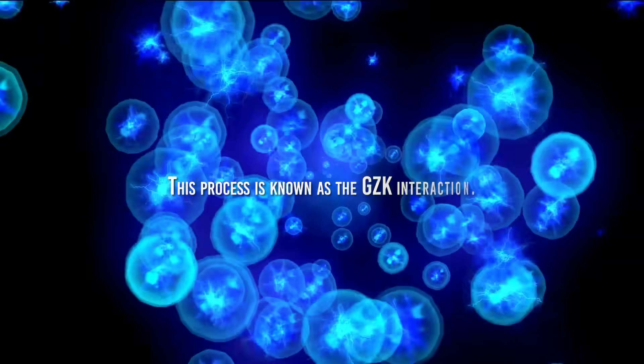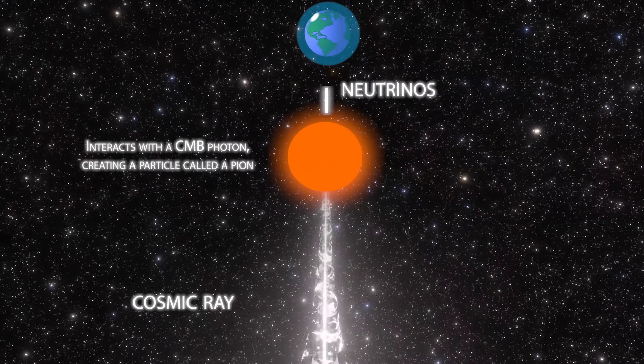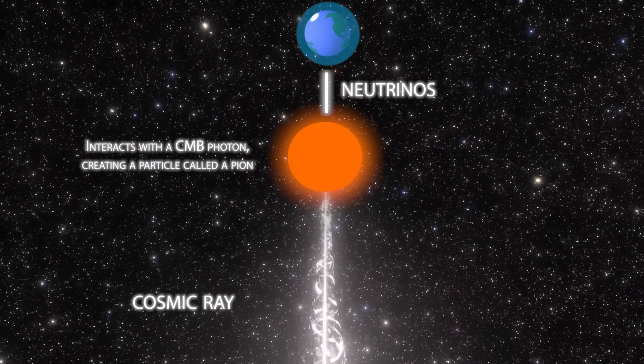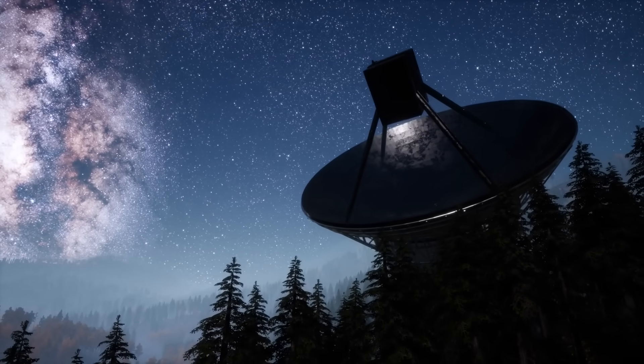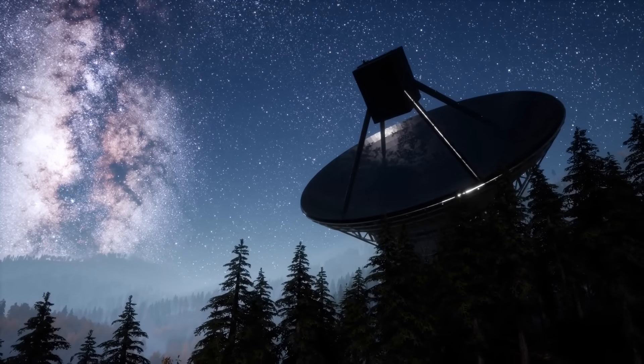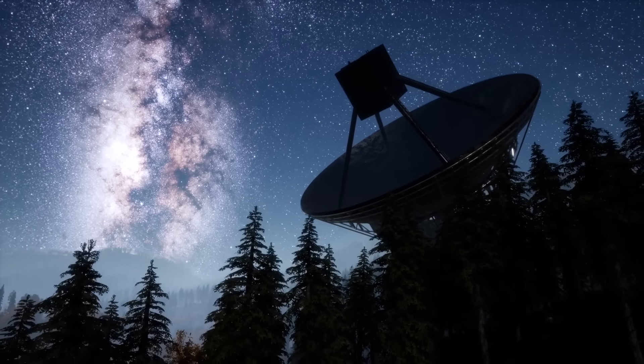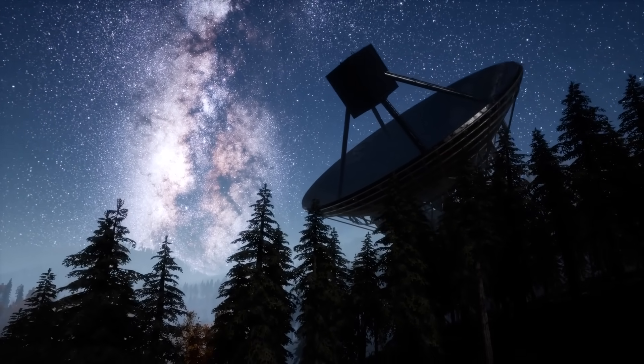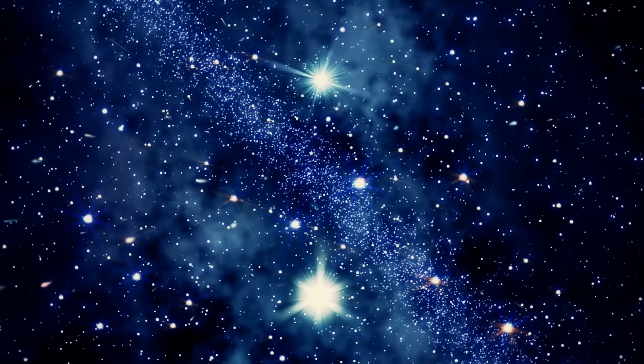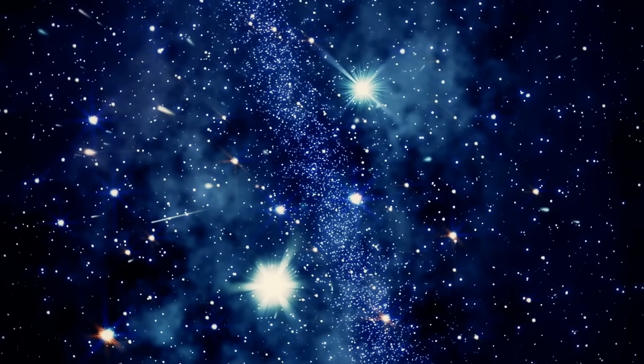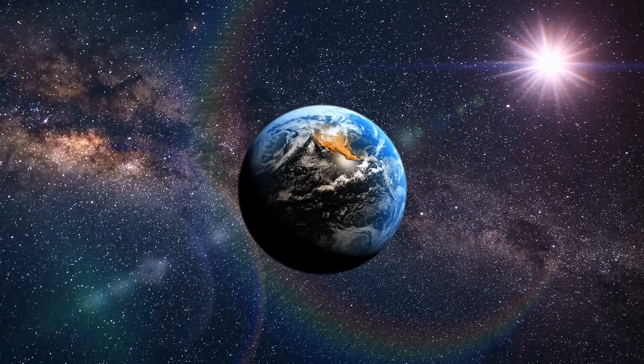The pions produced in this interaction eventually decay into lower-energy particles, including neutrinos. The key implication of the GZK limit is that if ultra-high-energy cosmic rays were coming from extremely distant sources outside our galaxy, they would have undergone multiple interactions with the CMB along their journey. These interactions would result in a significant loss of energy, making it highly unlikely for cosmic rays, with energies beyond the GZK limit, to reach Earth from sources outside the Milky Way.